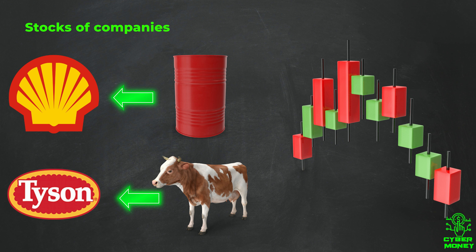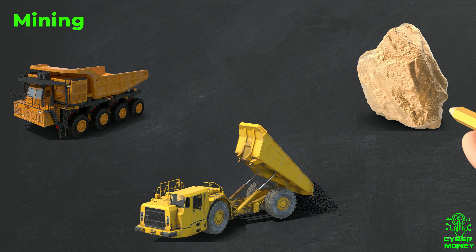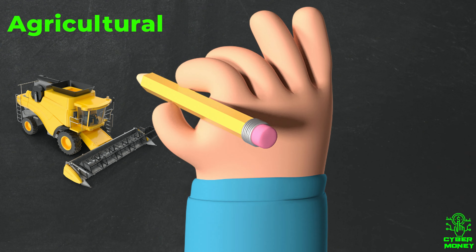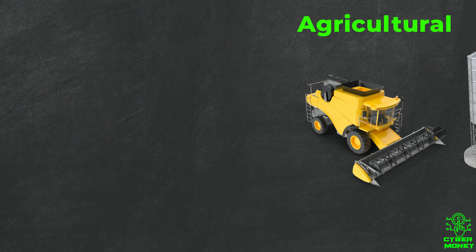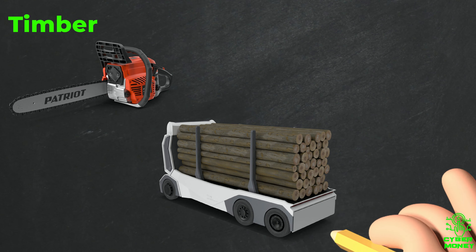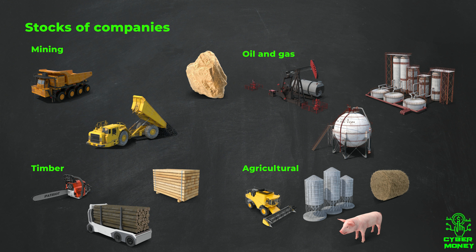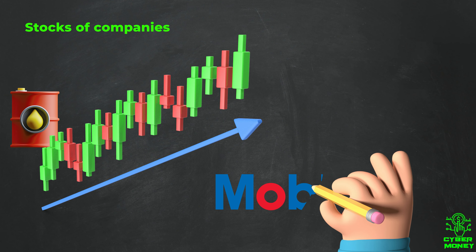Some examples of companies that deal in commodities include mining companies that extract and produce metals such as gold, silver, and copper; oil and gas companies that explore, extract, and refine oil and gas; agricultural companies that produce and distribute food products such as grains, livestock, and dairy; and timber companies that produce and distribute wood products. Investing in these companies gives you exposure to commodity markets, as the price of their stock will be affected by the price of the commodity they produce.